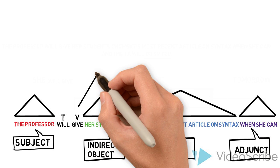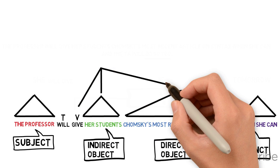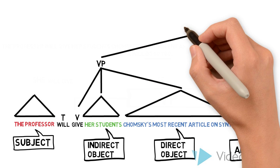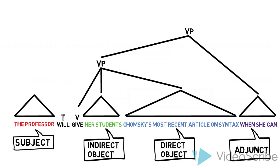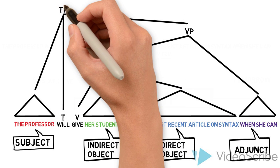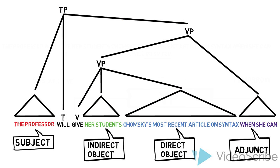Then we can start to build up the VP by having V and its two objects. Then we can add the adjunct to VP. And then finally we can add the TP layer which is going to include the subject, T, and the VP.